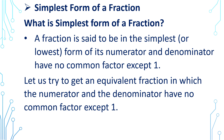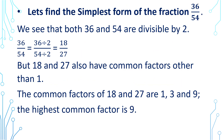Now I will explain you about the simplest form of a fraction. A fraction is said to be in its simplest or lowest form if its numerator and denominator have no common factor except 1. Let us try to get an equivalent fraction in which the numerator and denominator have no common factor except 1. Let us find the simplest form of the fraction 36 by 54.